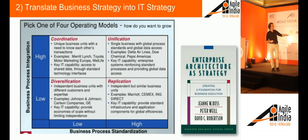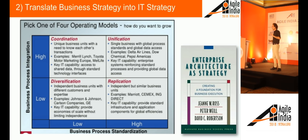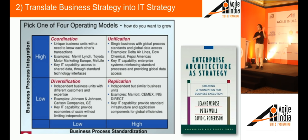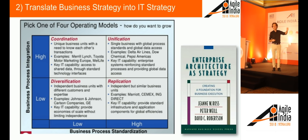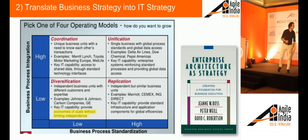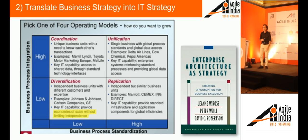This one does require some explanation. There are two axes on this matrix showing how much the business processes are standardized versus how much they're integrated. At the bottom left you find businesses that are neither standardized nor integrated — like Siemens or GE, companies that make everything from a locomotive to a power station to a refrigerator. They make everything. It's not standardized and it's not integrated. The best you can do is try to get some economies of scale by getting them on the same infrastructure, but they won't have the same applications because they do so many diverse things.